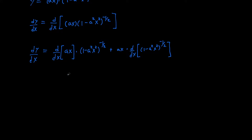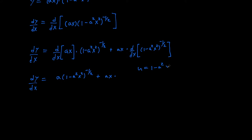The derivative of AX is just going to be A, multiplied by 1 minus A squared X squared to the negative one half. For the second term, AX times the derivative of 1 minus A squared X squared to the negative one half, we need to use a U substitution. Let U equal 1 minus A squared X squared. Then du/dx equals negative 2A squared X.